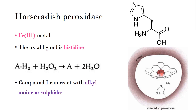For horseradish peroxidase, Fe is similarly in the +3 oxidation state. The axial ligand here is histidine, and the imidazole nitrogen is attached to Fe. Compound I is formed similarly, and this Compound I can react with alkyl amines or sulfides for further reactions. Ultimately hydrogen peroxide is converted into unharmful forms and various other substrates are oxidized.